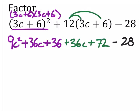So if I combine my like terms, it looks like I've got a 9c², and then my two c values, 72c.